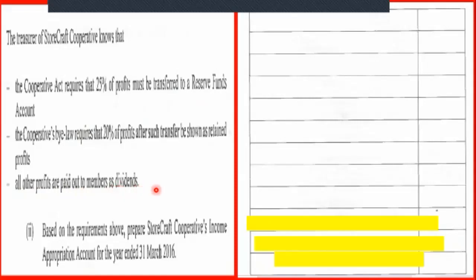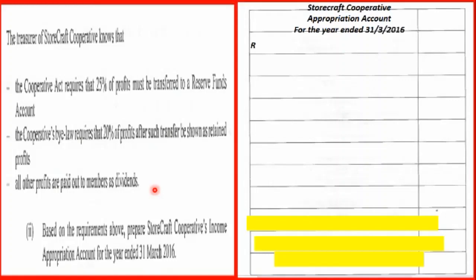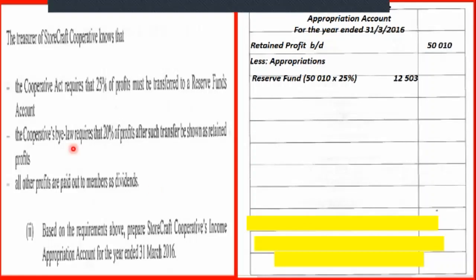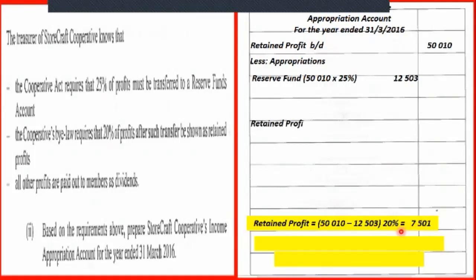All other profits in between would be paid out as dividends. Our approach is to head up the account again and bring in the retained profits. Then we take the appropriations: the reserve fund is 25% of $50,510, which equals $12,503. Next, we calculate the cooperative 20% retained portion: we take $50,510 minus $12,503, then multiply by 20%, which equals $7,501. That becomes the retained profit carried down.